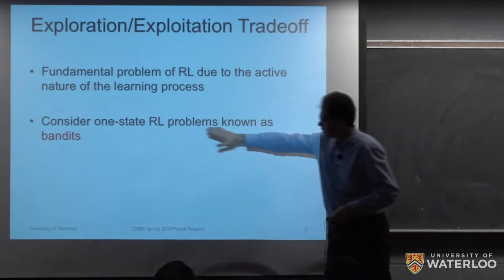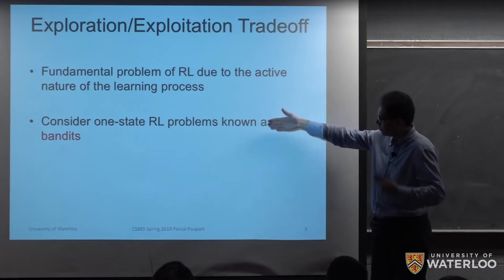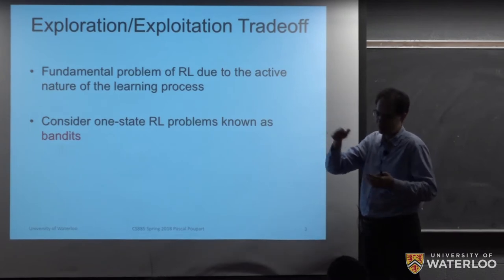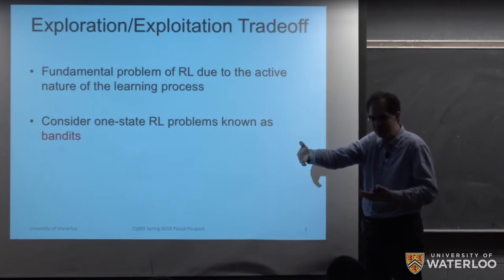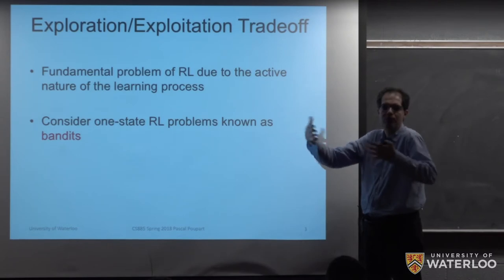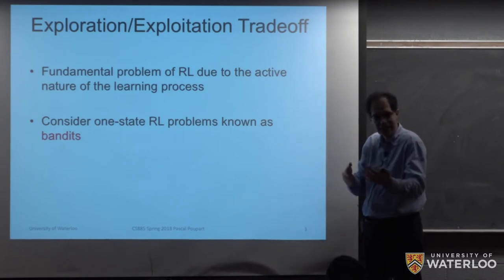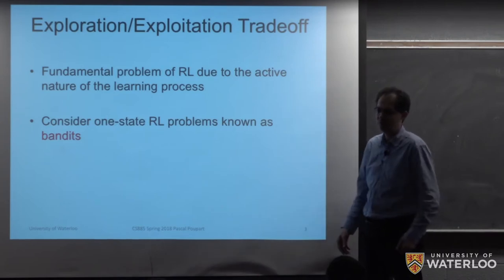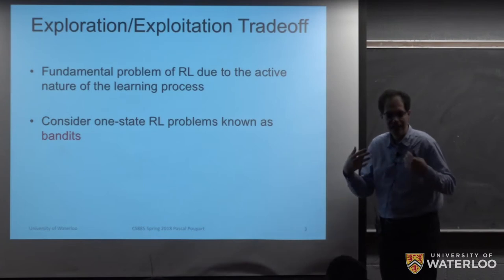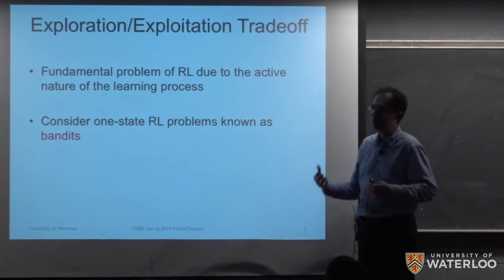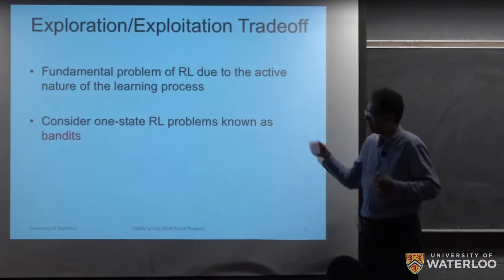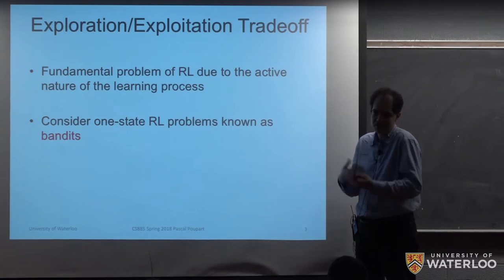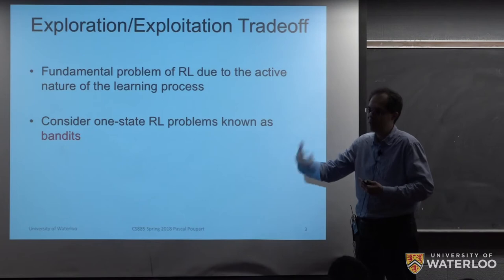If we consider just one-state reinforcement learning problems, these are known as bandits. Choosing an action might give us high rewards immediately, but there's a trade-off: we might want to do some exploration and select an action that is not very good, just to see what happens and gain more information. In the context of bandits, this exploration and exploitation problem is the core challenge — how should we explore so that in the long run we obtain a good policy?